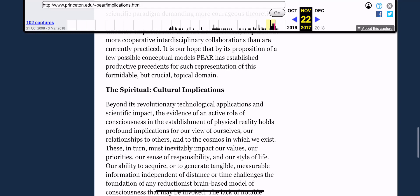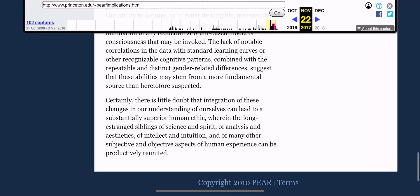Our ability to acquire or to generate tangible, measurable information independent of distance or time challenges the foundation of any reductionist brain-based model of consciousness that may be invoked. The lack of notable correlations in the data with standard learning curves or other recognizable cognitive patterns, combined with the repeatable and distinct gender-related differences, suggest that these abilities may stem from a more fundamental source than heretofore suspected. Certainly, there is no doubt that integration of these changes in our understanding of ourselves can lead to a substantially superior human ethic, wherein the long-estranged siblings of science and spirit, of analysis and aesthetics, of intellect and intuition, and of many other subjective and objective aspects of human experience can be productively reunited.